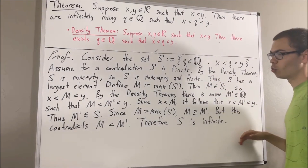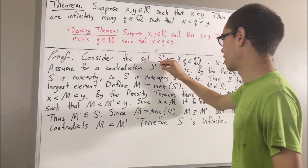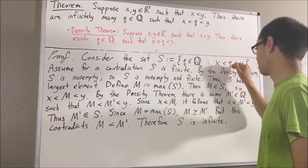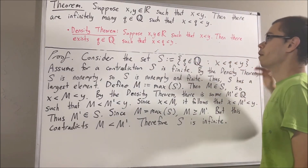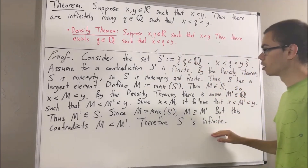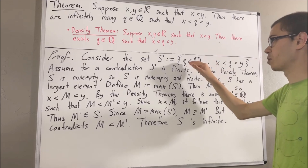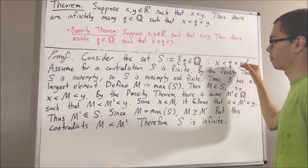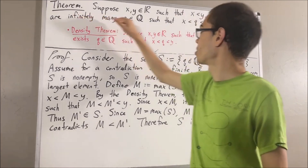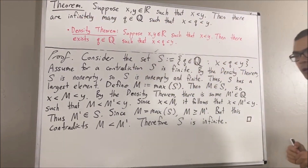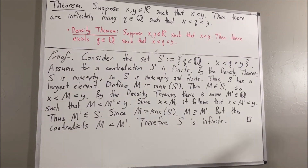Putting this together: we started out by considering the set of all rational numbers q such that x is less than q is less than y. From there, we proceeded to show that this set is infinite. So there are infinitely many rational numbers q such that x is less than q is less than y. That is precisely what we wanted to prove, and this completes the proof. That's pretty much it for this video. Thank you.